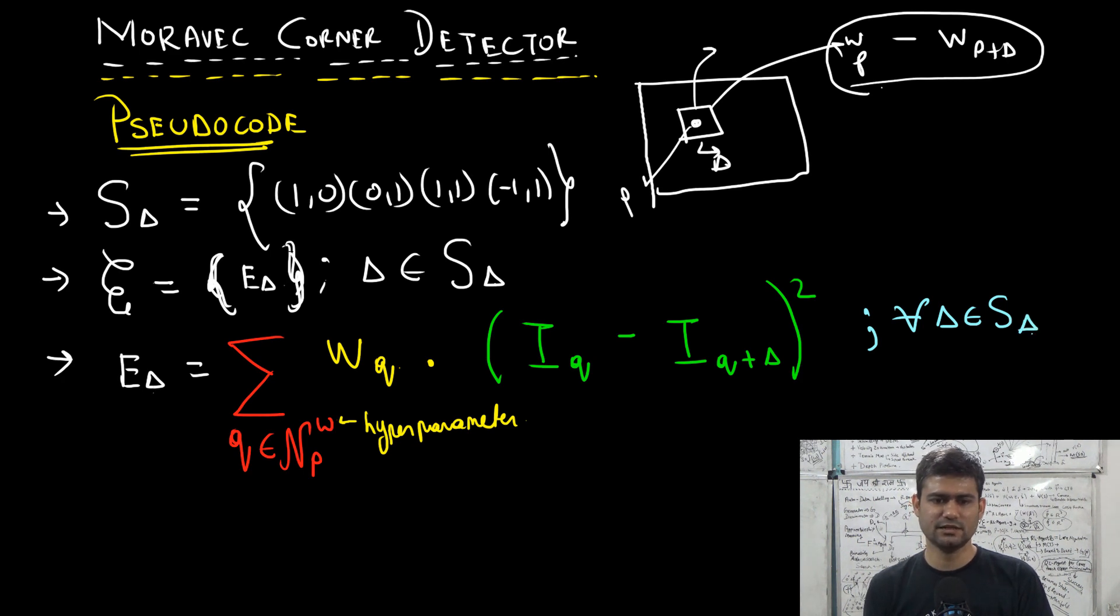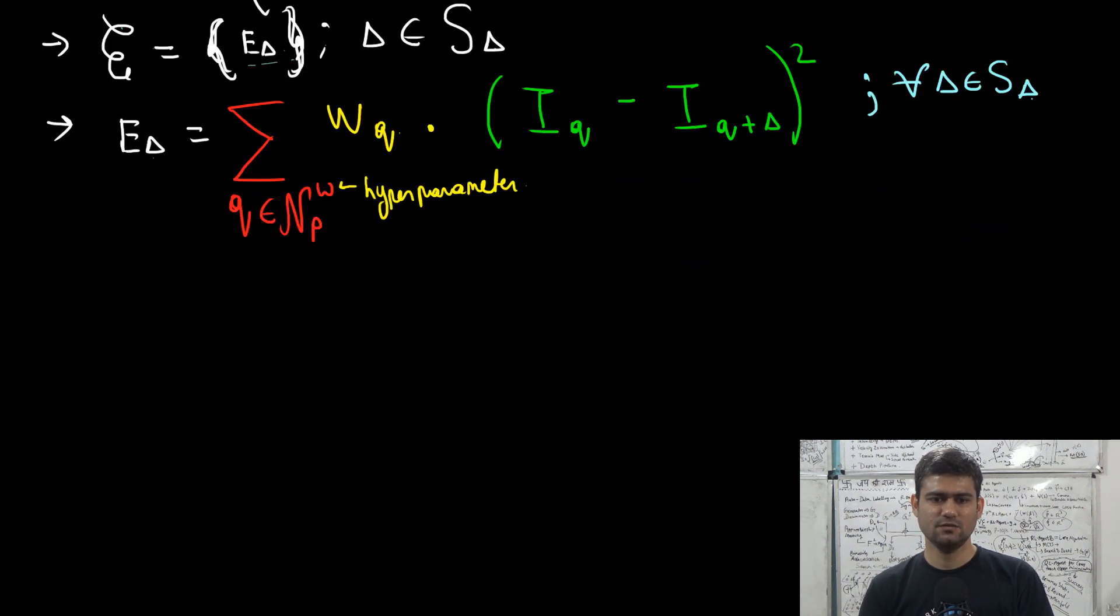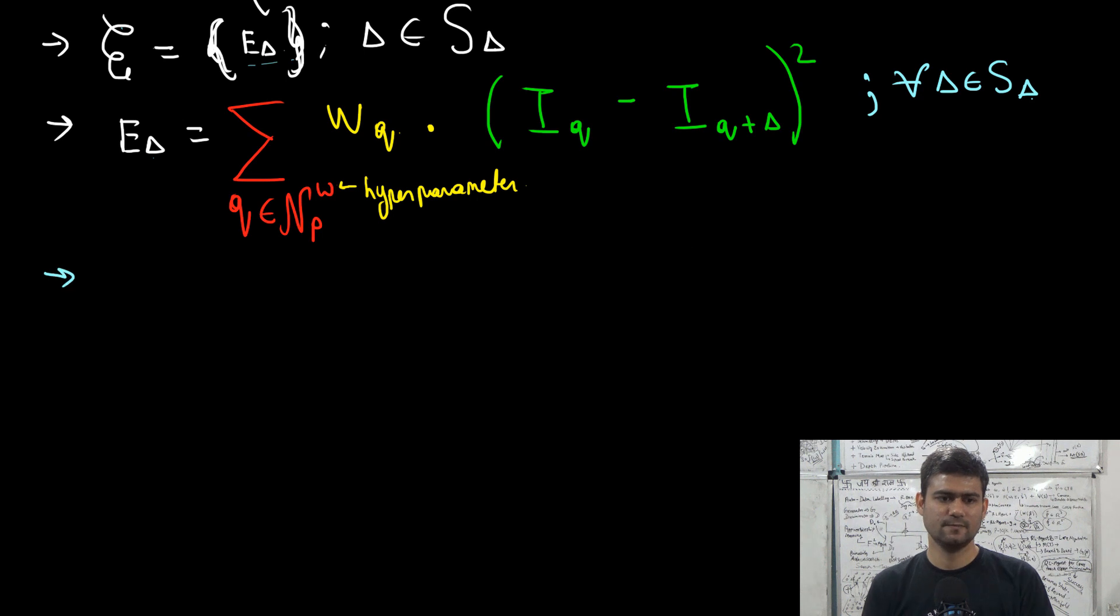So W_Q times the individual pixel differences I_Q minus I_(Q+delta) squared. So we have four different values of delta: delta_1, delta_2, delta_3, delta_4. And thus we will get this vector eta as a four-dimensional vector of E_deltas. And then we compute for each of the pixel the minimum difference in this set or this vector. So assume that this is a set. So E_P is equal to min of, we can subscript it with P to denote that this is the vector of differences computed for pixel P.